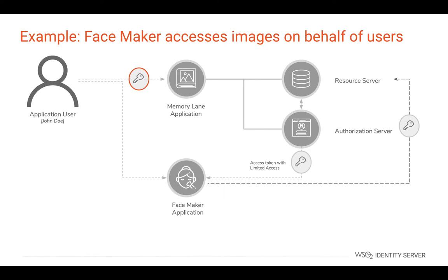To do this, as a user you can first authenticate with the MemoryLane service and request a token with limited access. Then that token can be handed over to the Facemaker application. Using this new token, the Facemaker application can access the photographs.